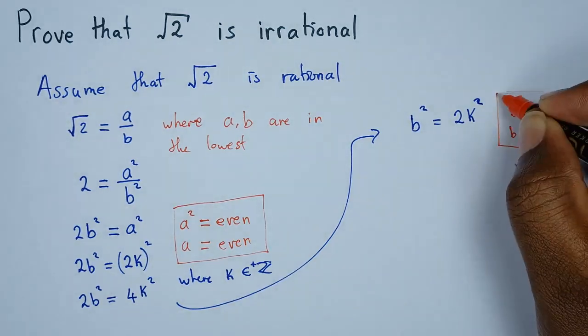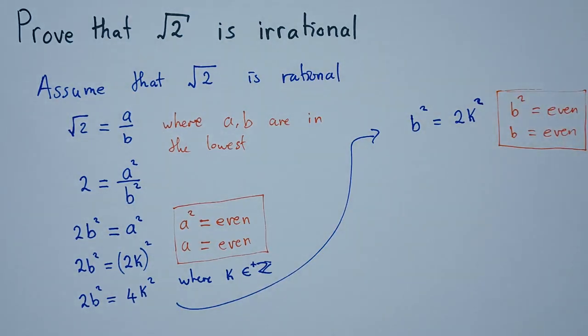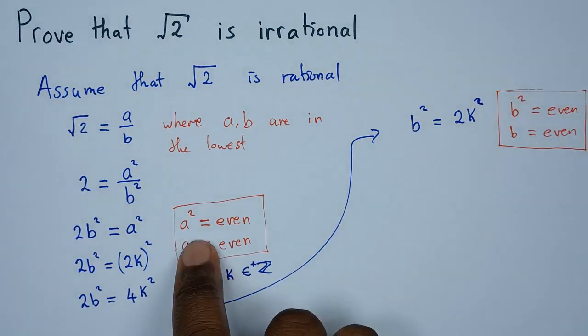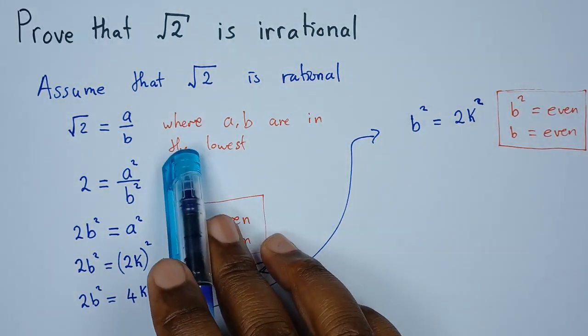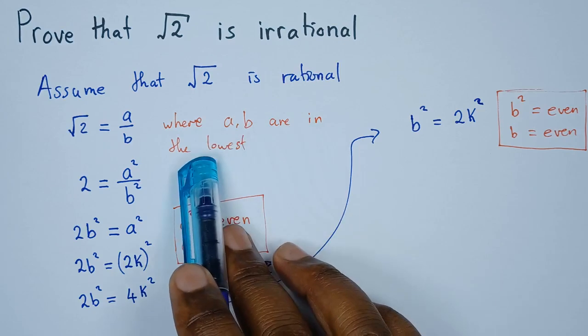Now this is where the part for contradicting comes in. I want you to understand this: since we've proven that a is even and b is even, it contradicts the fact that a and b are in their lowest terms.